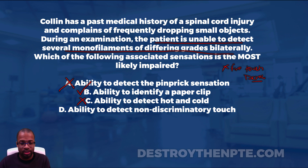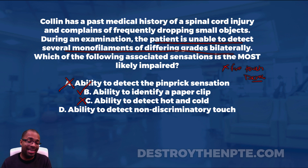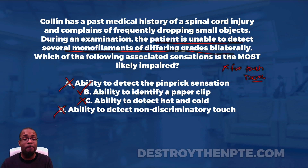Answer D: ability to detect non-discriminatory touch, also known as crude touch. Crude touch travels through the anterior spinothalamic tract — not the DCML. Since it doesn't go through the dorsal column medial lemniscus, we don't expect it to be impaired, leaving us with the final answer: B, ability to identify a paperclip.